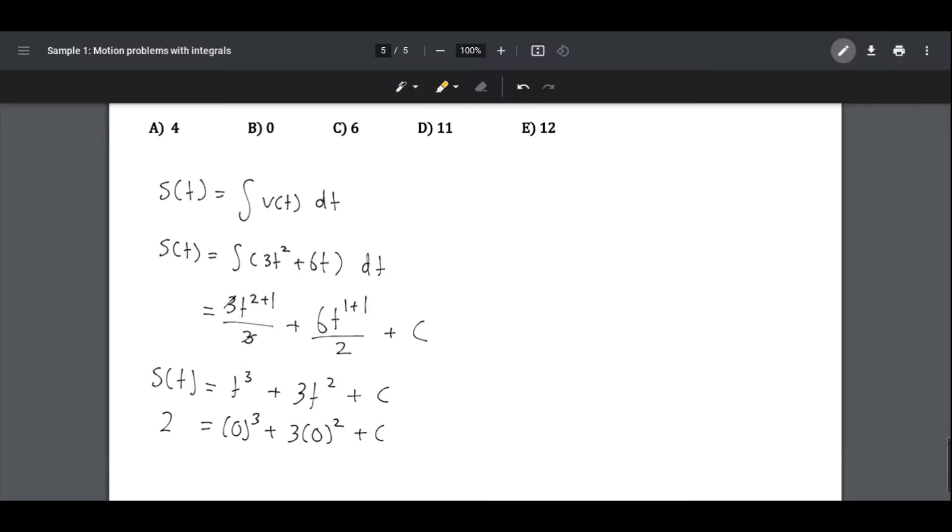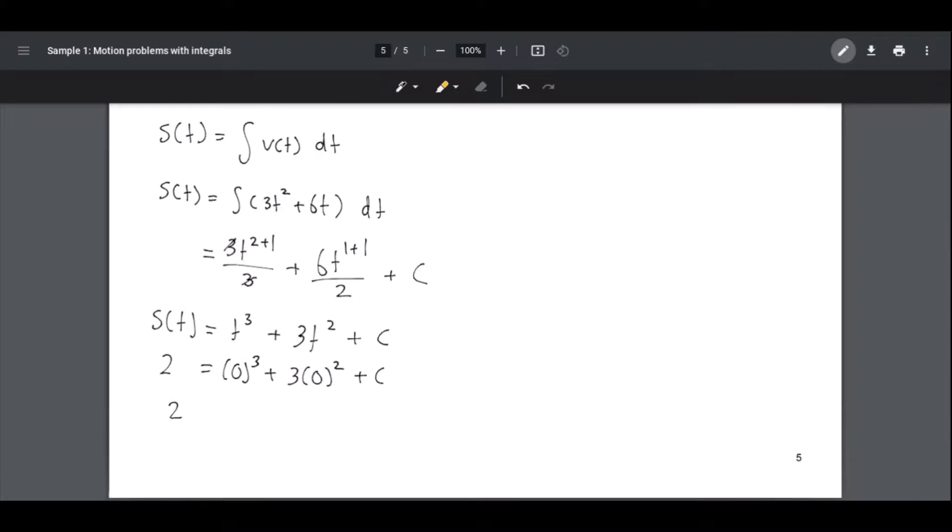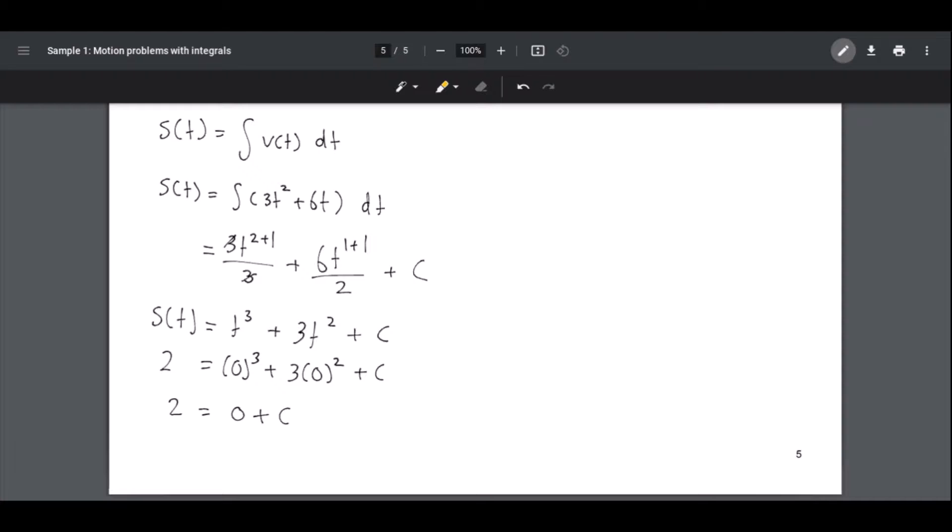Now let's simplify it. It's going to be 2 equals 0 plus c. After moving 0 to the other side, c is equal to 2.